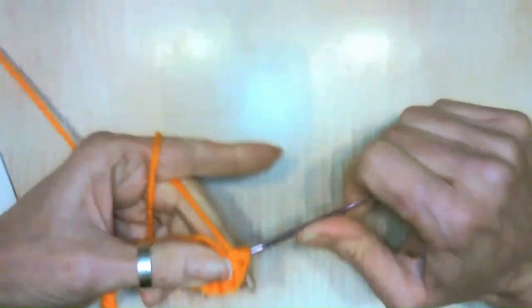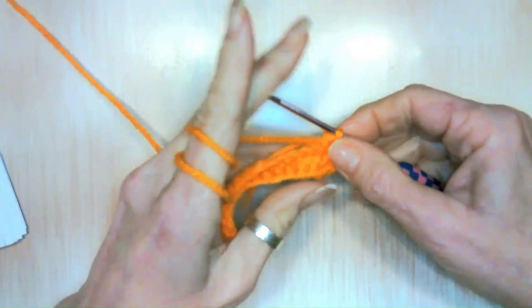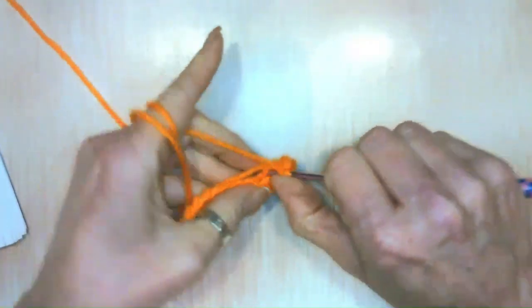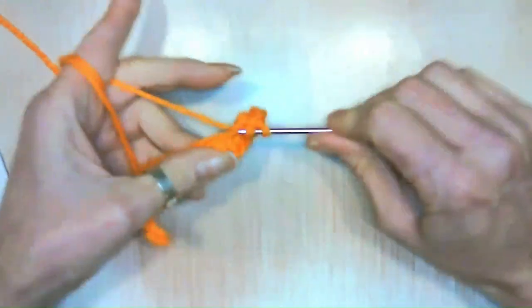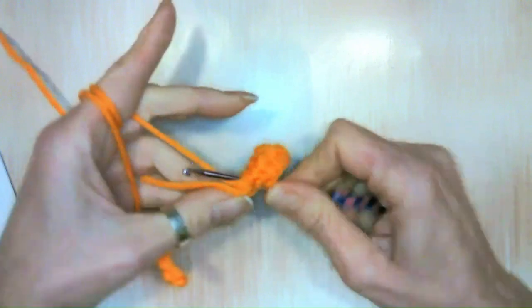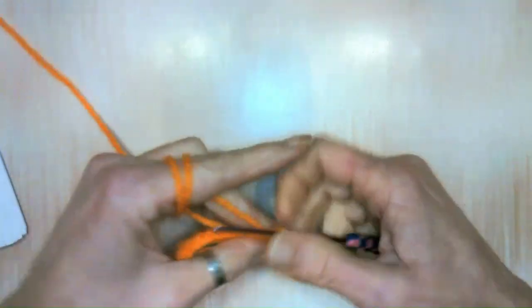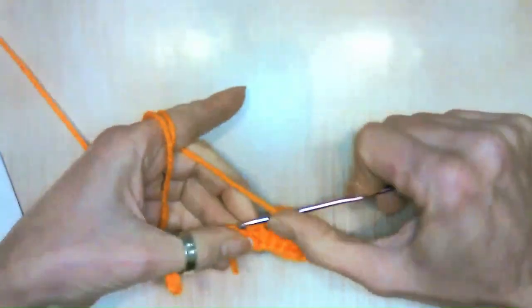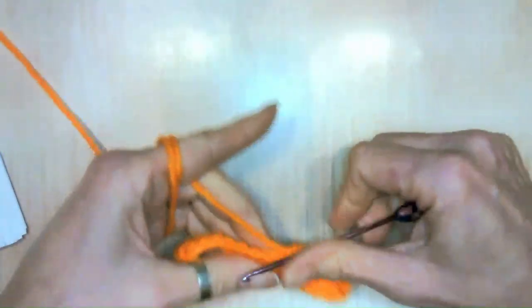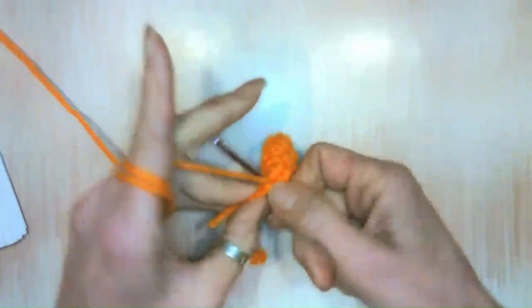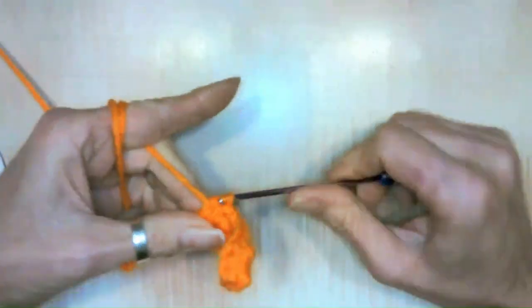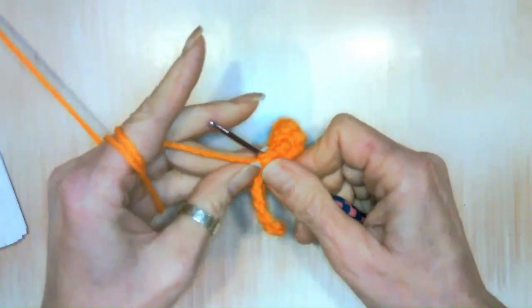Now we're going to do five half double crochets in our last stitch. Two, three, four, remember to tuck that end in, five, wonderful. Now down the other side, we're going to do, guess what, the same we did on this side. Let's do eight half double crochets. And eight. And six single crochets.